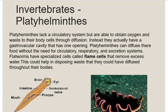In platyhelminthes, the circulatory system is absent, and the body surface helps them absorb oxygen through diffusion. Flame cells are present in the body, and their function is to help move waste material out of the body. In this way, both oxygen absorption and waste removal occur without a specialized circulatory system.